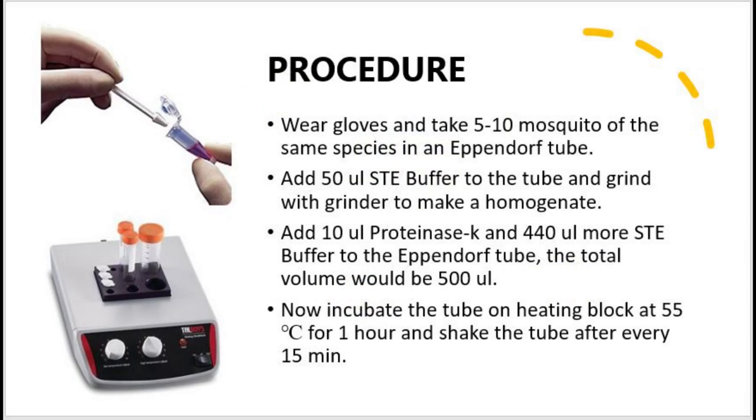Add 50 microliter STE buffer to the tube and grind with pestle mortar to make a homogenous mixture. Then add 10 microliter proteinase K and 440 microliter more STE buffer to the eppendorf tube and again grind with the pestle mortar as shown in the figure.